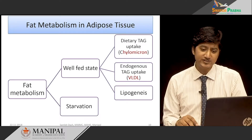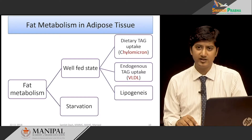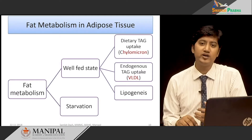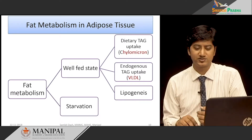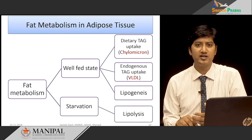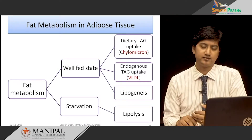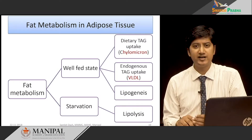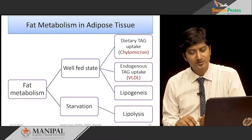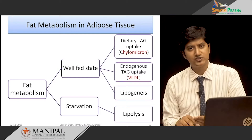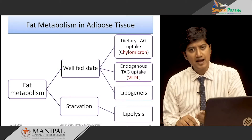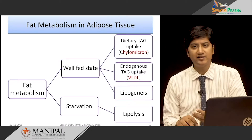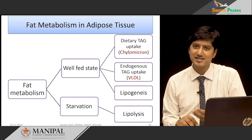In the starvation state, when the body needs energy, the triacylglycerol in adipose tissue is broken down by the process of lipolysis, which ultimately provides energy to the body. Fat metabolism in the well-fed state is an anabolic process — building up fat stored in adipose tissue — while in the starvation state, it is a catabolic process where stored fat is broken down as the body needs energy.